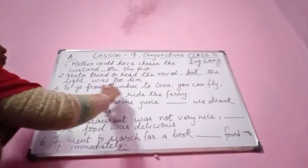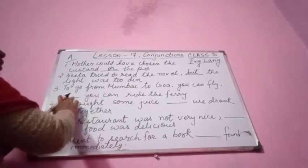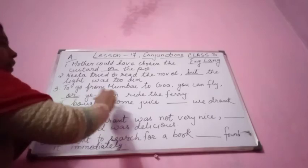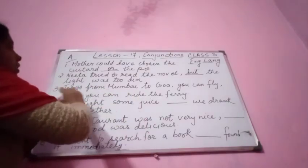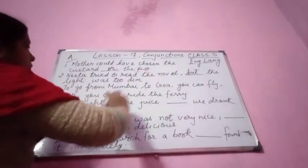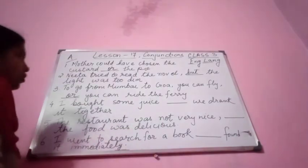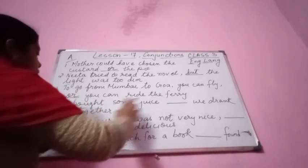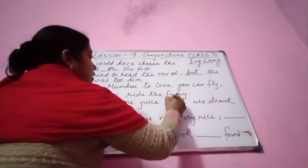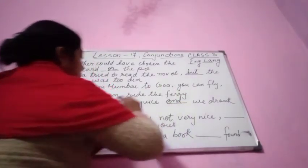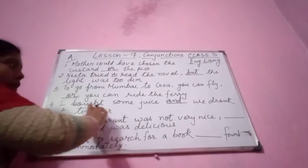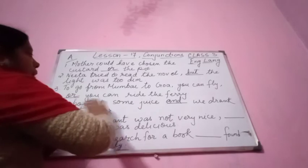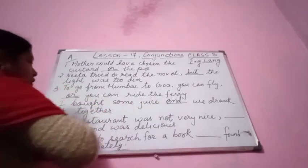Number three: To go from Mumbai to Goa, you can fly — or — you can ride the ferry. Choice is given — you can fly also or you can ride the ferry also, so we use 'or.' Number four: I bought some juice — and — we drank it together. Two similar things are joined using 'and': I bought some juice and we drank it together.